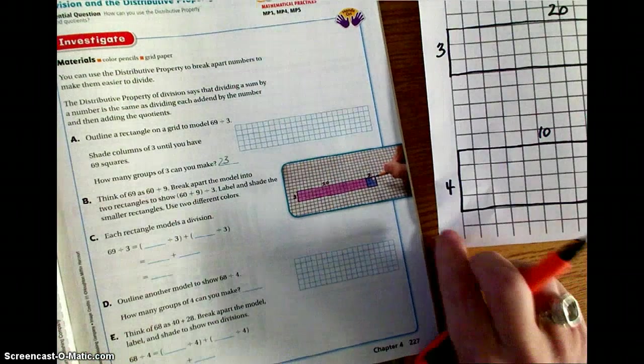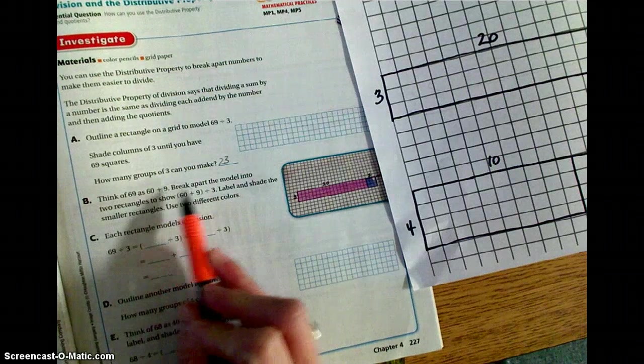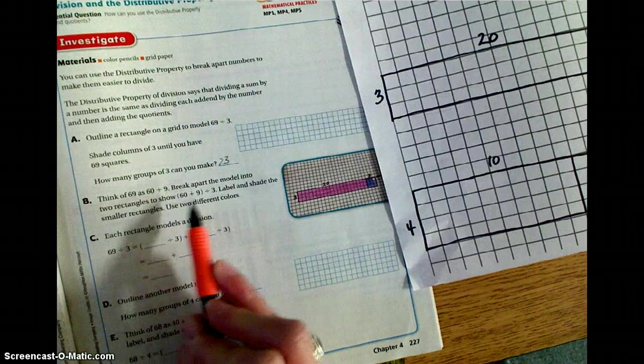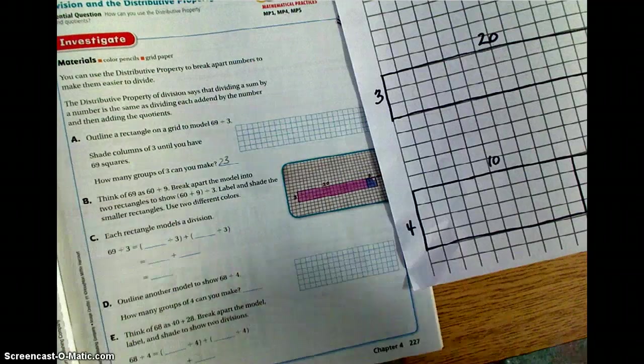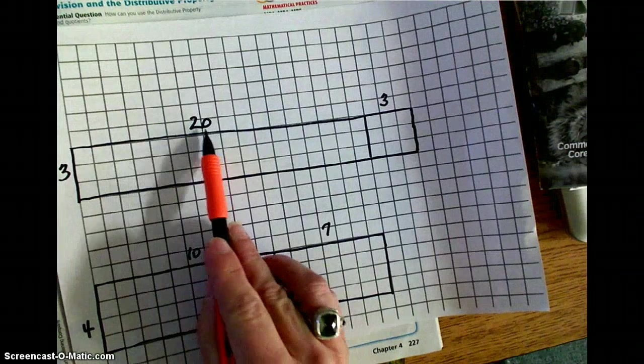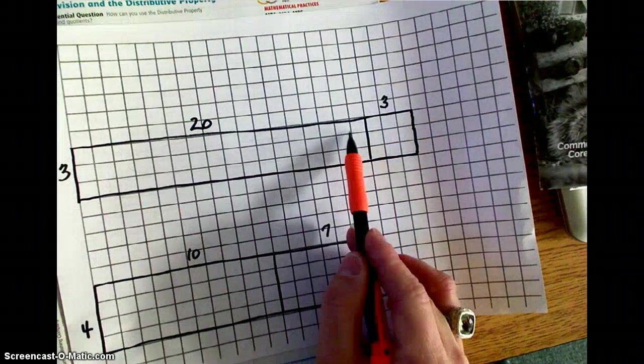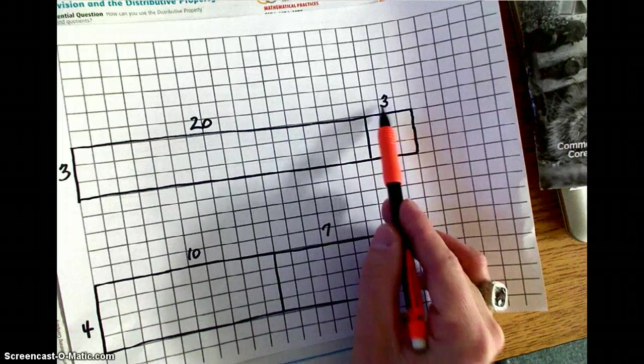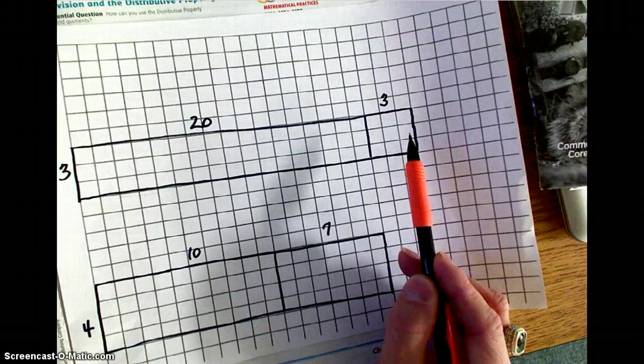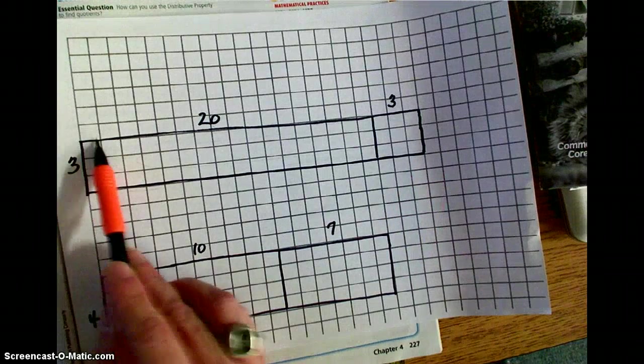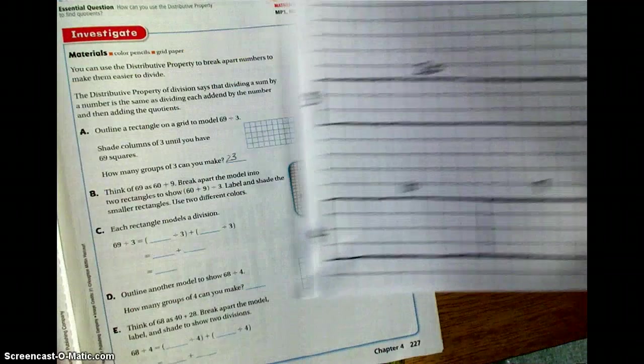Then, it wants me to think of 69 as 60 plus 9. Break apart the model into two rectangles to show 60 plus 9 divided by 3. Well, I've already done that because I know 20 and 3. So I have 20 columns of 3, and then I have 3 columns of 3. So then total, I would have 69 small squares. So your rectangle at this point should be 3 by 23 with 69 total squares inside.